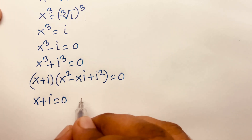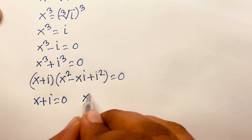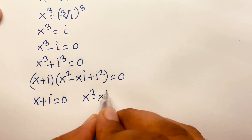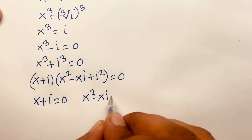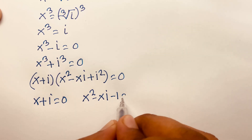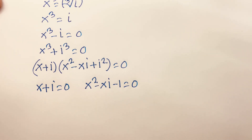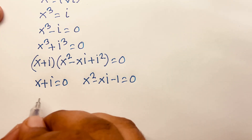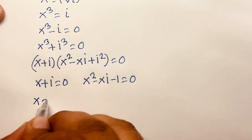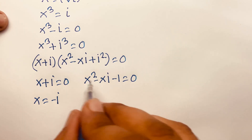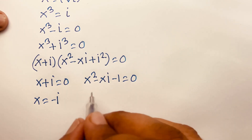In the other case: x squared minus xi plus i squared equals zero. Since i squared equals minus one, this becomes x squared minus xi minus one equals zero. From the first case, x equals minus i. The second case is a quadratic equation.